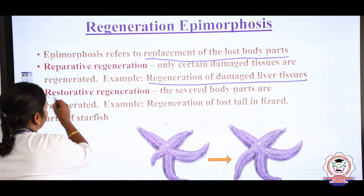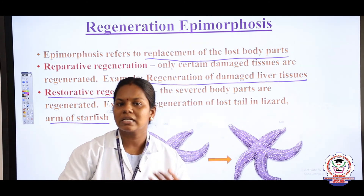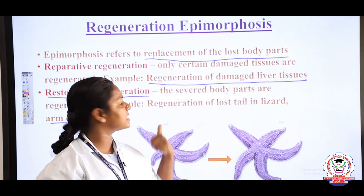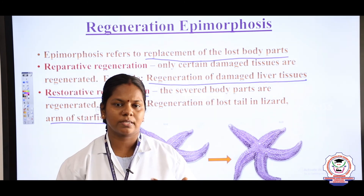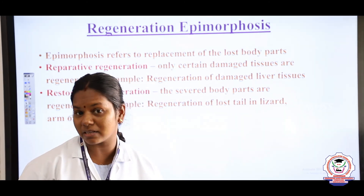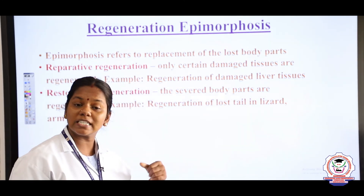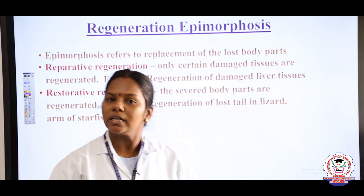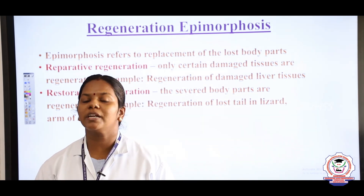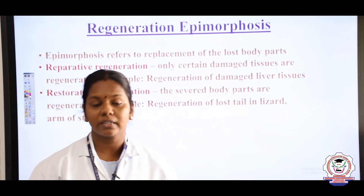So in regeneration: morpholysis examples are hydra and planaria; epimorphosis includes reparative (liver tissues) and restorative (starfish). The asexual reproduction topic comes to an end. We have discussed binary fission, multiple fission, encystation in amoeba, strobilation, sporulation, budding, and regeneration. Go through the study material and the assessment attached in the description. Thank you, children — have a nice day.